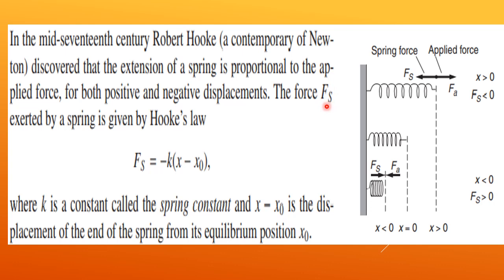The spring force Fs exerted by a spring is given by Hooke's law. It is defined as Fs = -k(x - x0), where k is the constant of proportionality called the spring constant, meaning Fs is directly proportional to the displacement. x0 is the equilibrium position, and x - x0 is the displacement of the end of the spring from its equilibrium position x0.